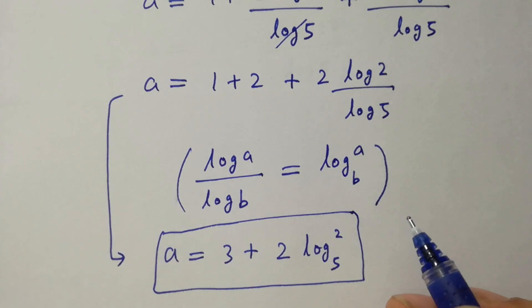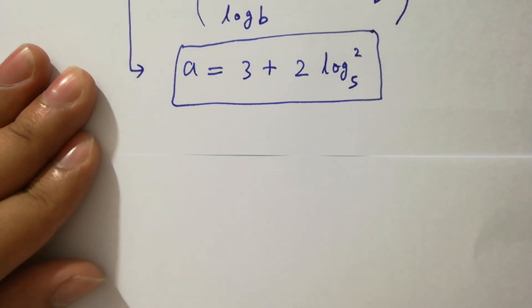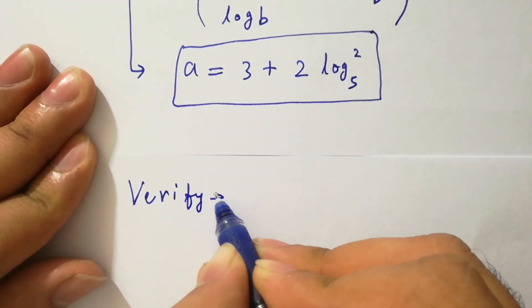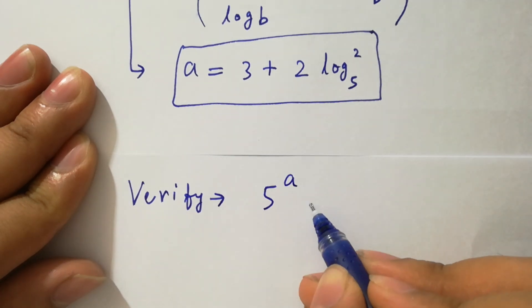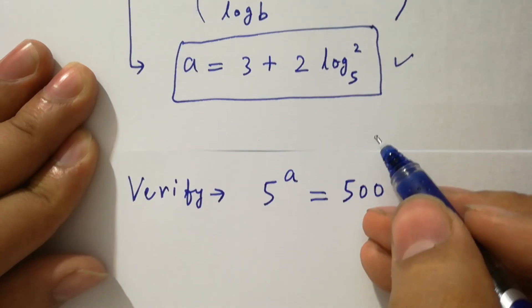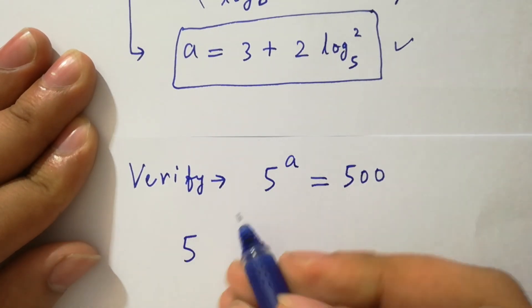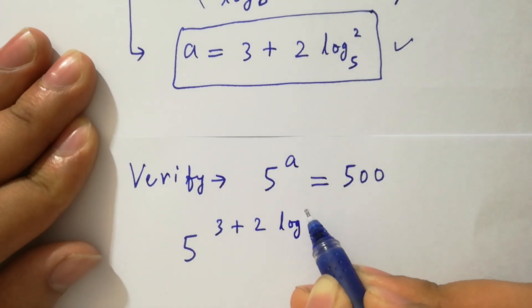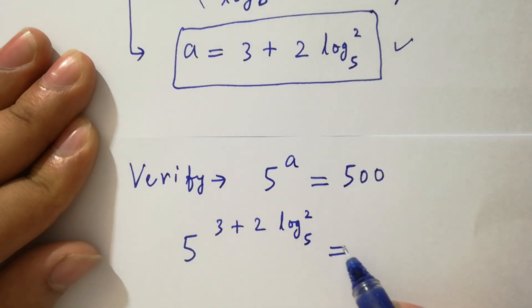I am going to verify that 5 to the power a equals 500. Putting the value of a: 5 to the power 3 plus 2 log 2 to the base 5, equals 500.